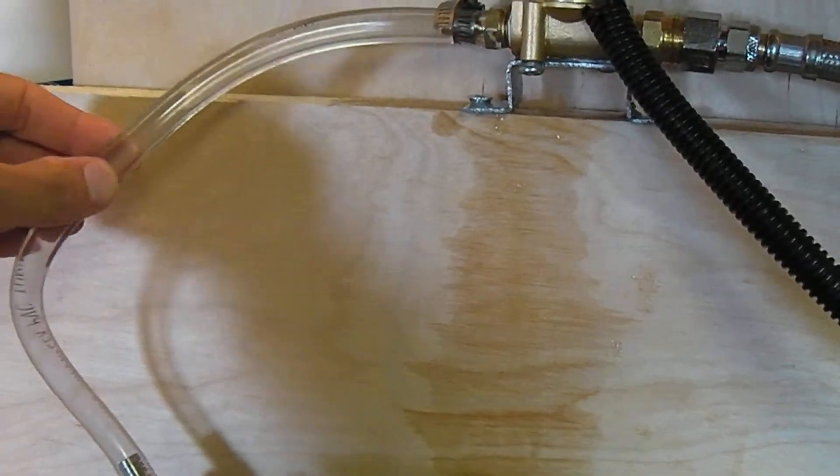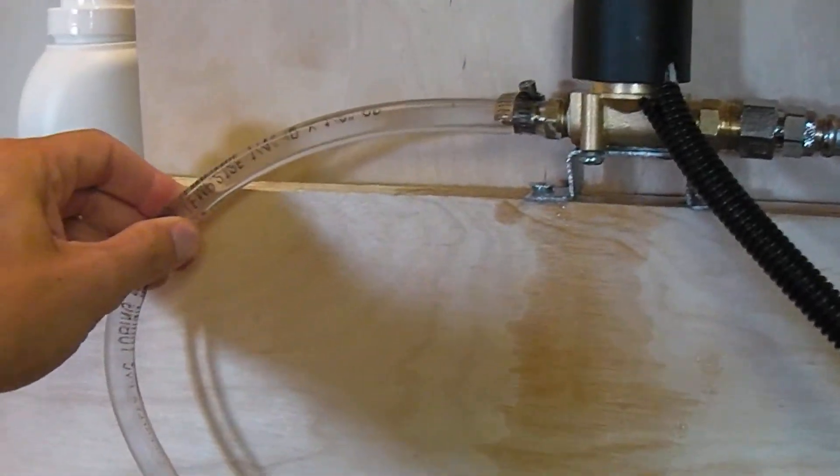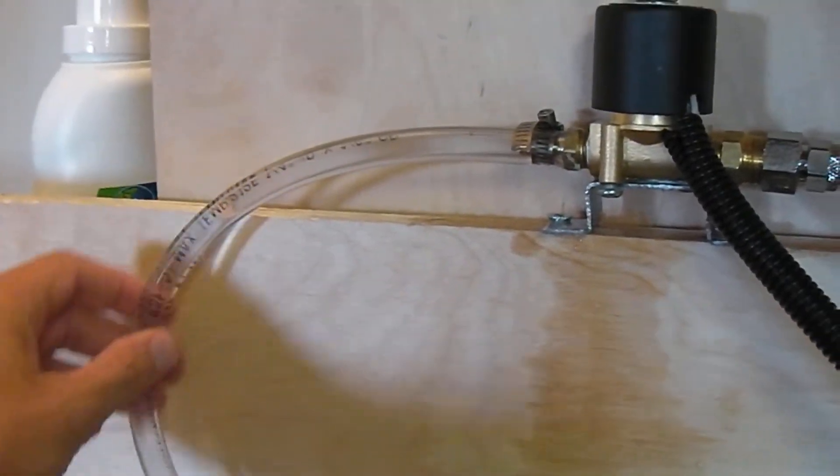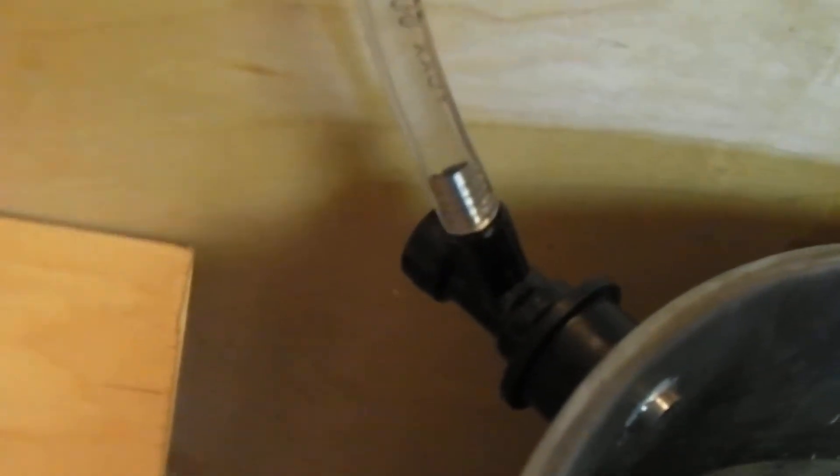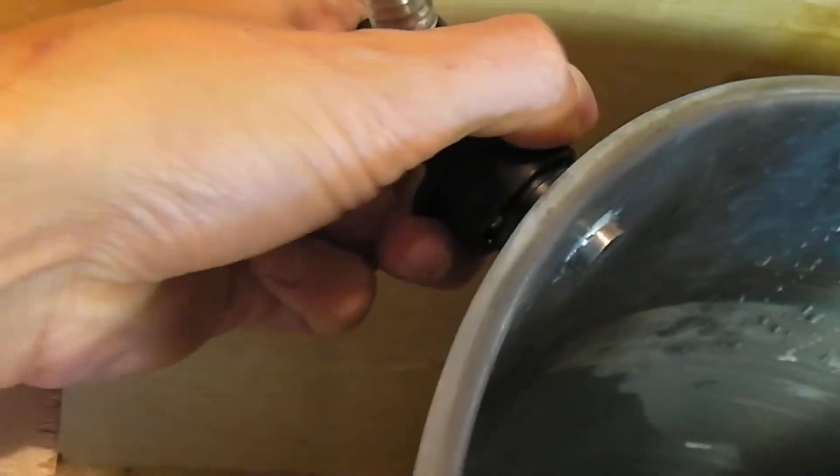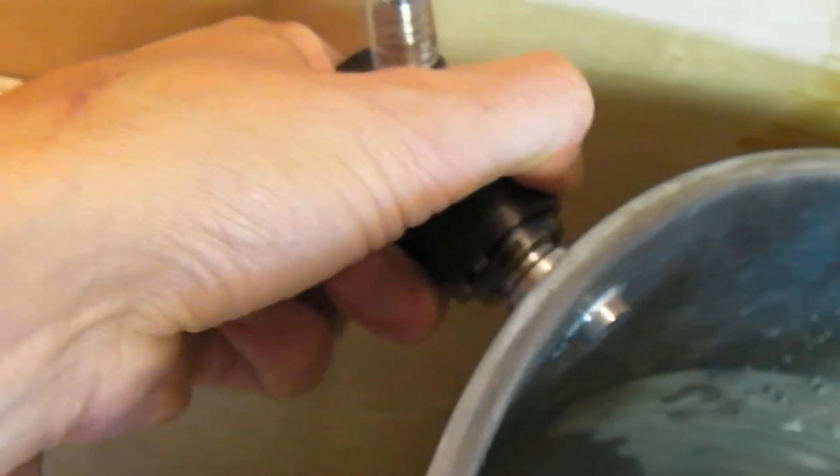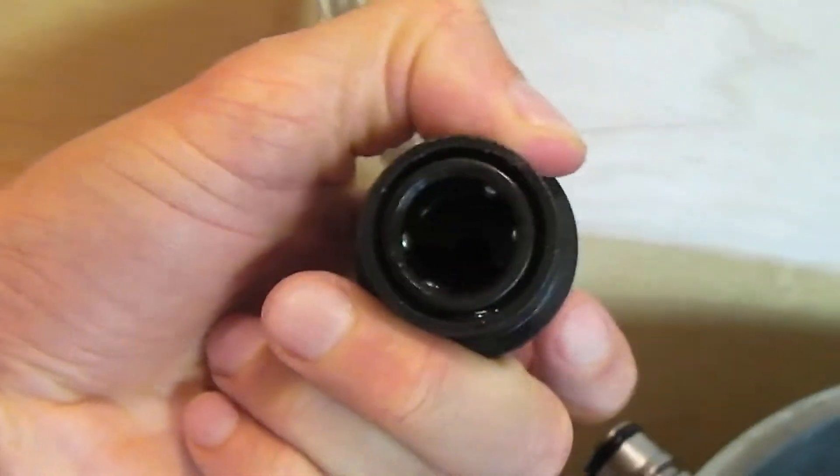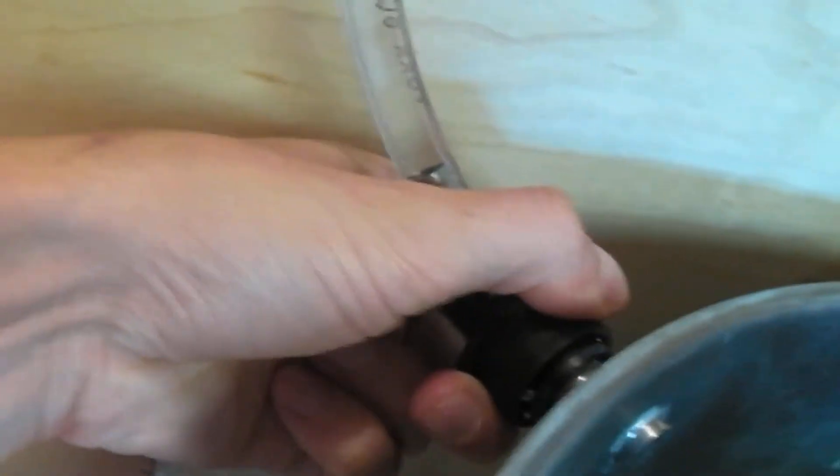Standard beer line that we all use on our kegerators, and I've also got a standard corny quick disconnect. I've soldered a post to the pot just there, but I've taken the valve out.